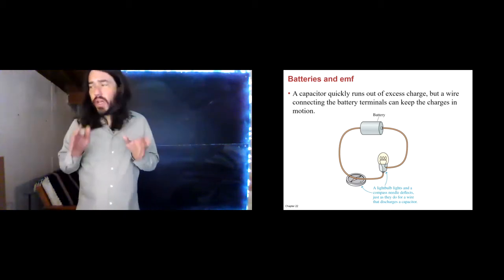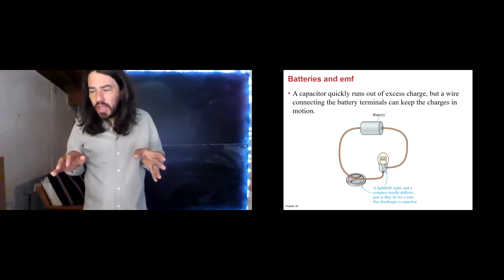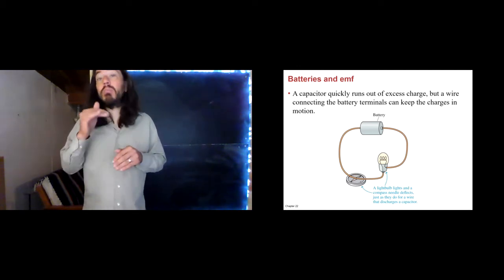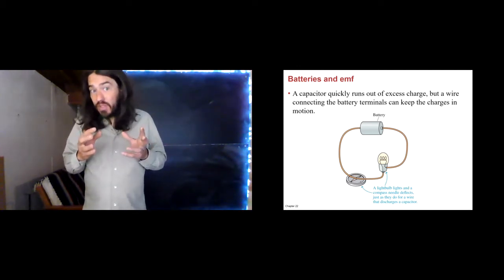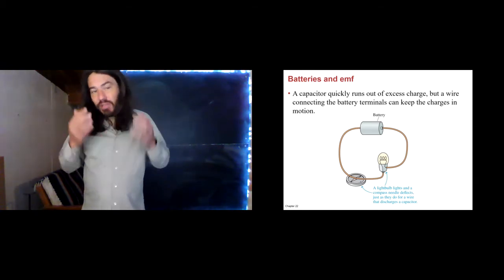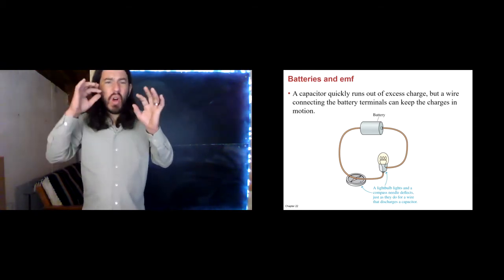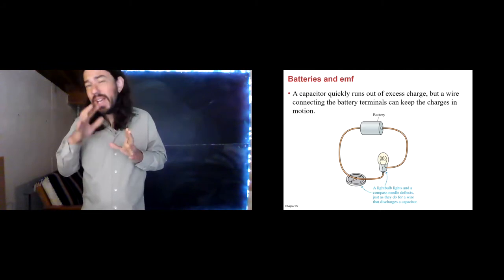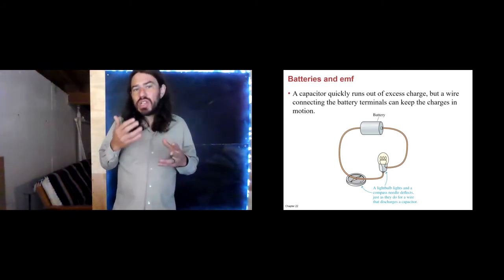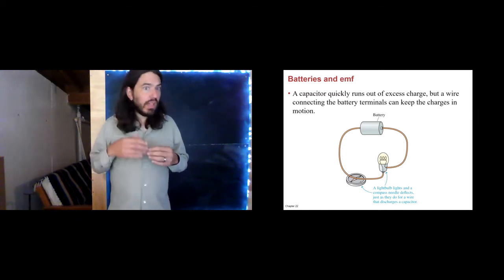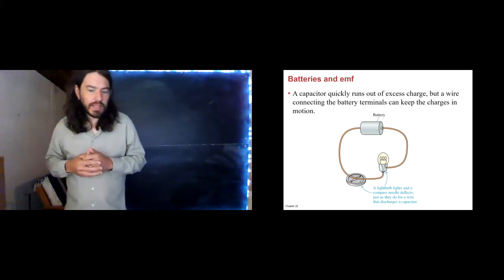We know that for most situations, we don't store charge with a capacitor. Most of our devices run on batteries. A battery uses chemistry to create that potential difference, not really physics. So we're not going to get into a whole bunch of details about exactly how a battery works. For us, a battery is just a source of potential. Now, why do we use batteries instead of capacitors?